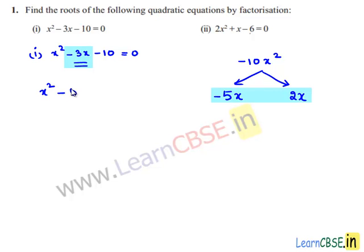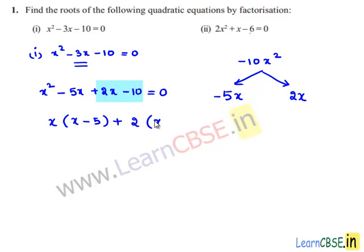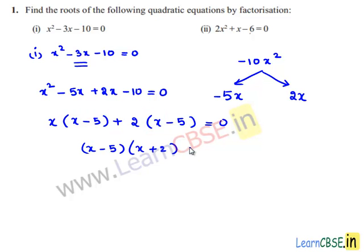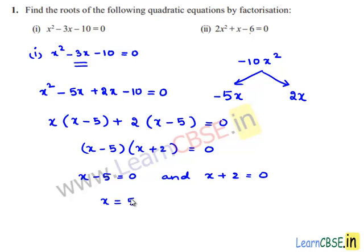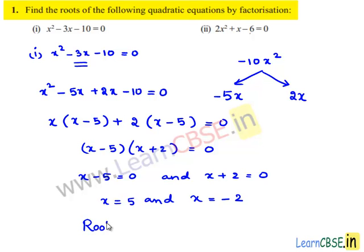So x squared minus 5x plus 2x minus 10 equals 0. x can be taken as common: x times (x minus 5), plus 2 times (x minus 5) equals 0. Taking x minus 5 as common, we get (x minus 5)(x plus 2) equals 0. Therefore x minus 5 equals 0 or x plus 2 equals 0, giving x equals 5 and x equals minus 2. The required roots are 5 and minus 2.